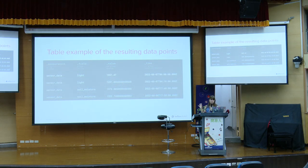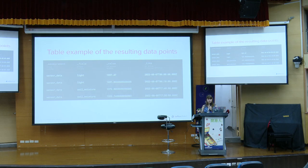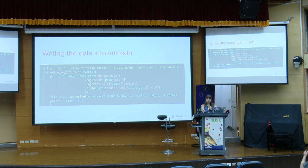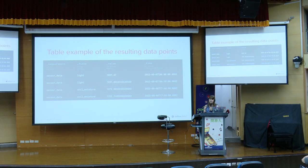This is a table example of the resulting data points. As you can see, we have our measurement — which we called sensor data — our field of light, the value that goes with it, and the time. You'll notice in the previous slide there was no time being sent. That's because InfluxDB, if you don't send it a specific time value, will assign one based on when the data stream reaches the database. You could define a time if you want, but most people just let it be assigned when it reaches the DB.